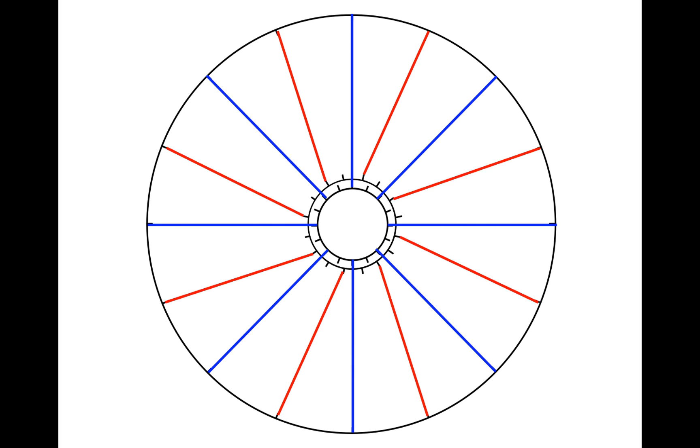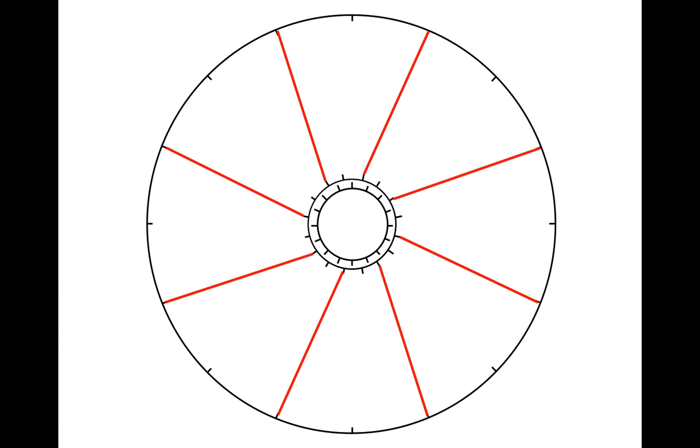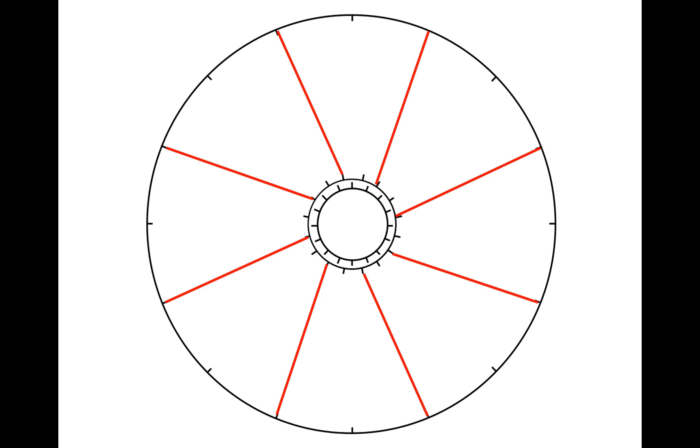But when I lace up my non-drive side spokes I have a choice of doing it this way or this way. And if I take out my drive side spokes so I can see the non-drive side a little more clearly, then I have this or this.